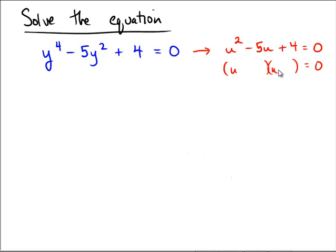What numbers do you know that multiply to 4 and add together to be negative 5? Well, that would be minus 1 and minus 4. And then if we solve this by the zero product property, that would mean that u is equal either to 1 or to 4.